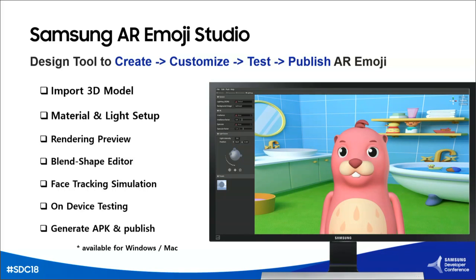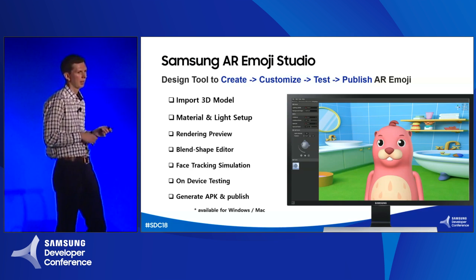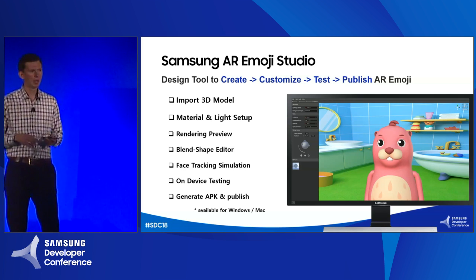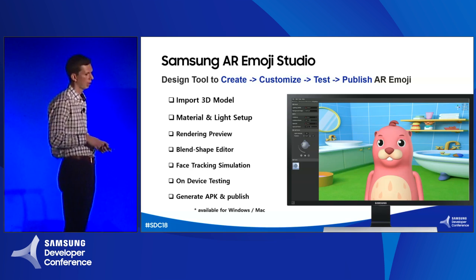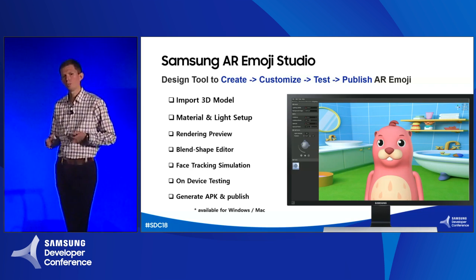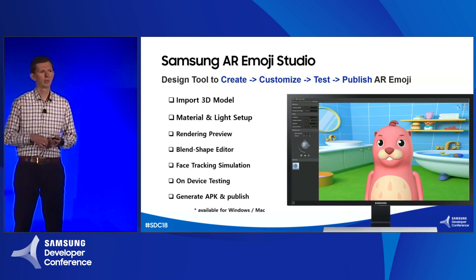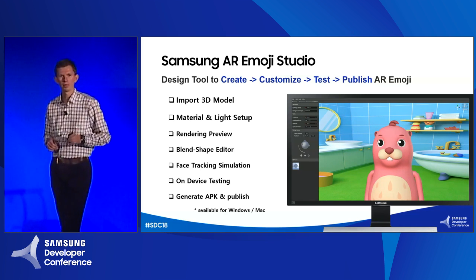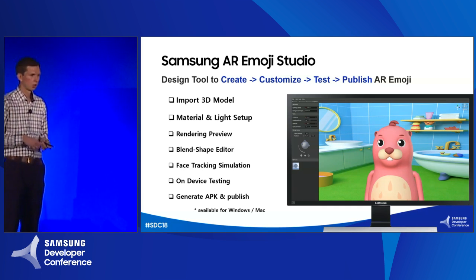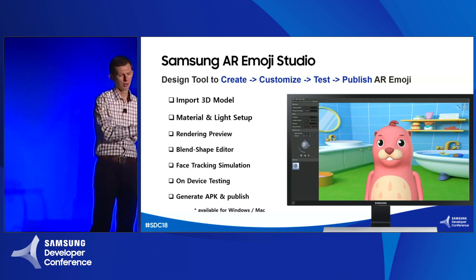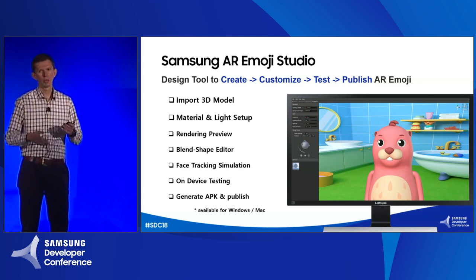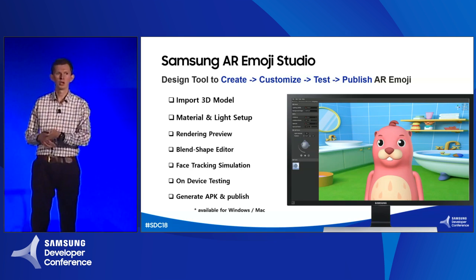AR Emoji Studio is a design tool that gives you a possibility to create, customize, test, validate, and publish your own AR emoji to the Galaxy Apps. Within the AR Emoji Studio we provide basic features like importing a 3D model, setting up materials and lights, and providing a simulation environment and rendering preview. The rendering preview utilizes exactly the same rendering pipeline used on the target device, so you can be sure it looks exactly the same. We also provide options to simulate your blend shapes and how they work, and finally export and generate the APK file.